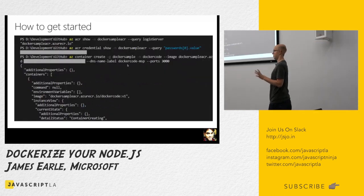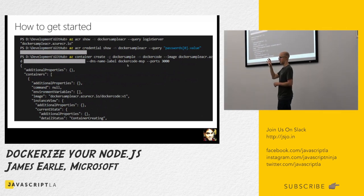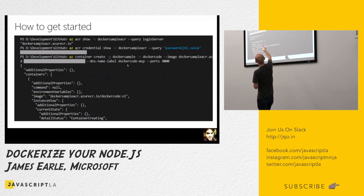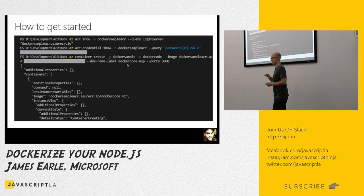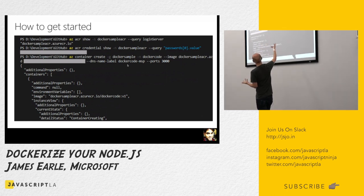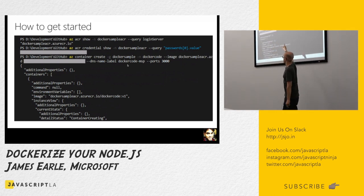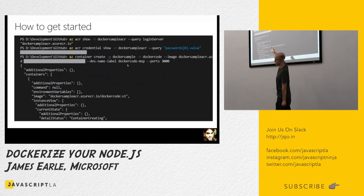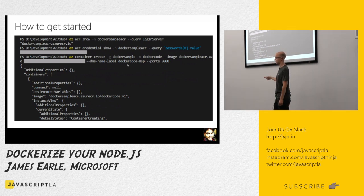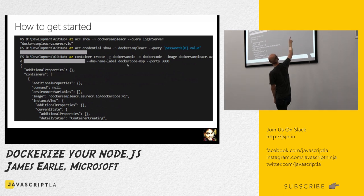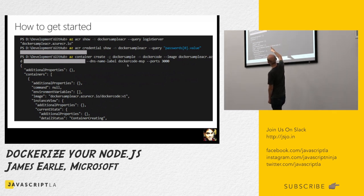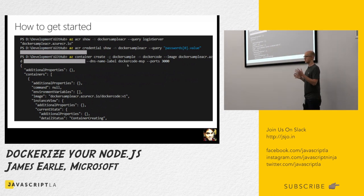Skipping some steps for brevity: once the image is in the cloud on your cloud registry, you can use 'az acr show' to get details about your registry — specifically the login server name, which is the URL and also the username you need when creating the container. We also ask for the password, which I've blocked out — just a big hash. These credentials from your container registry are used in creating a container.